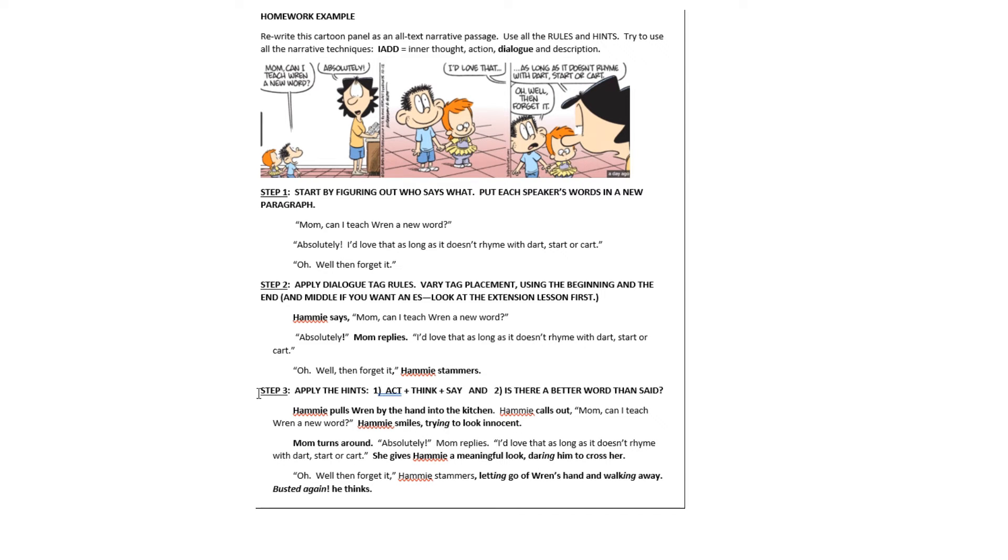So now I'm on step three. I've already figured out who's speaking and put their exact words in quotes. I've also added some dialogue tags at the beginning, middle, and end. I've checked my commas and exclamation points. They're inside the quotation marks. And I've got the right punctuation when the tag is at the middle or the end. My last step is to apply the hints. One is to add some acting or thinking of the character that goes with the dialogue. And the other one is to make sure I've used the most active verb that I can think of for the word said.